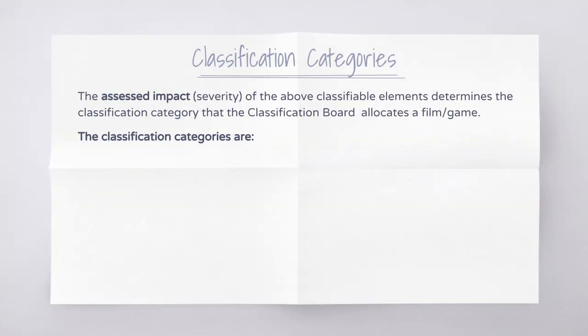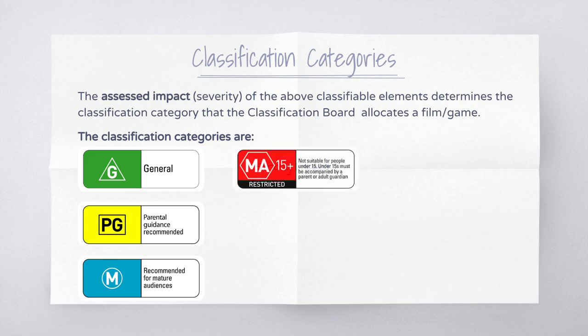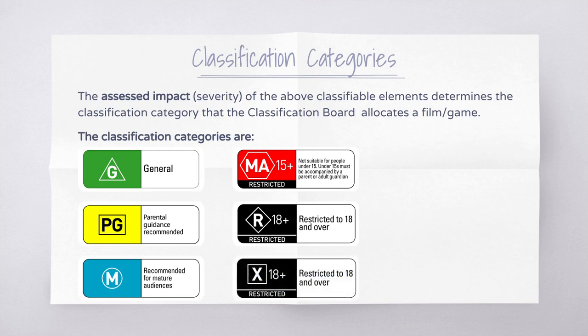The assessed impact — how severe each classifiable element is — determines the classification category. Very mild impact is G-rated; mild impact is PG; moderate impact is M; strong impact is MA15+ restricted; high impact is R18+ restricted; and a high impact of sexually explicit content — effectively pornography — receives an X rating.